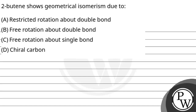Hello, let's read the question. The question says: 2-butyne shows geometrical isomerism due to — option A: restricted rotation about the double bond; option B: free rotation about double bond; option C: free rotation about single bond; option D: chiral carbon.